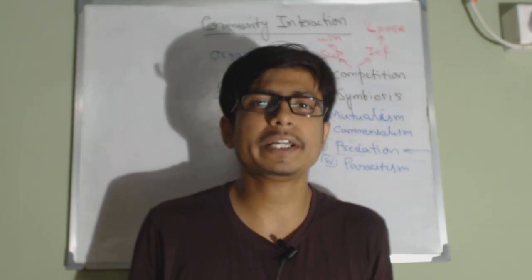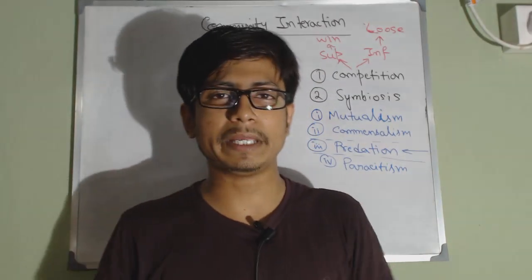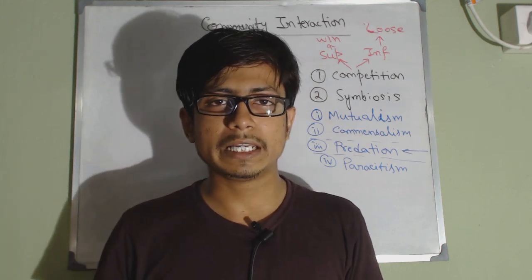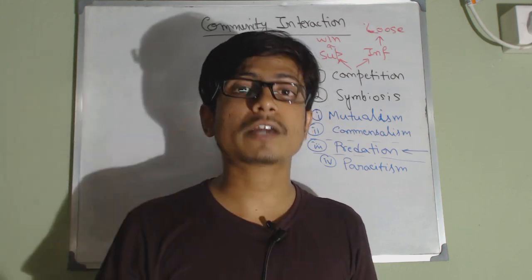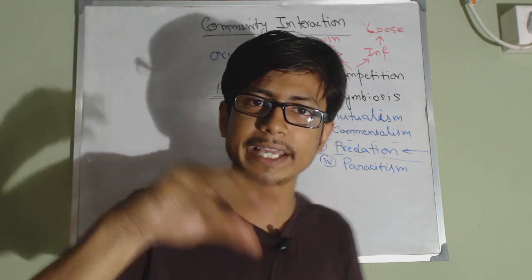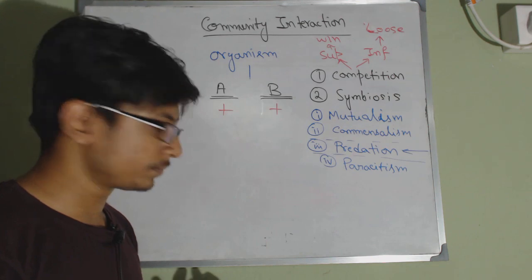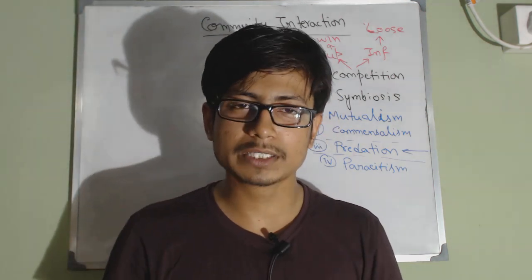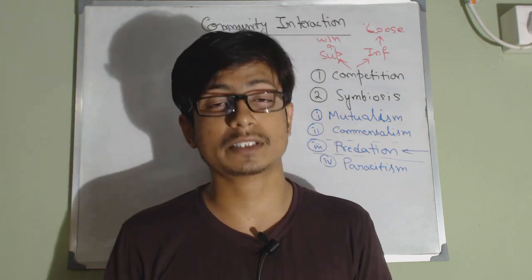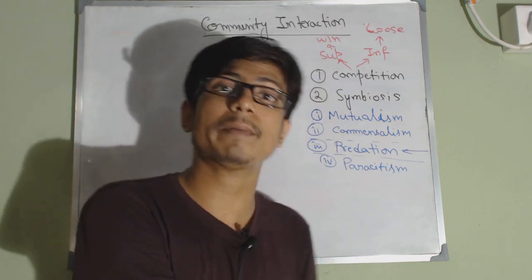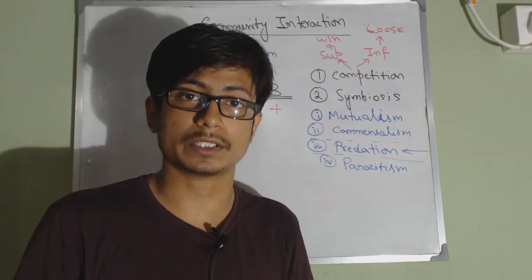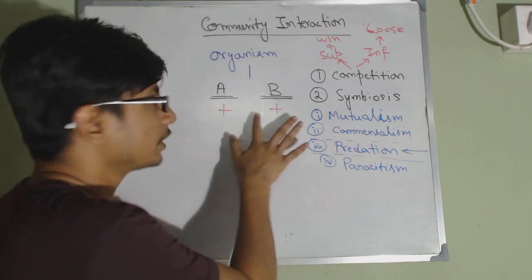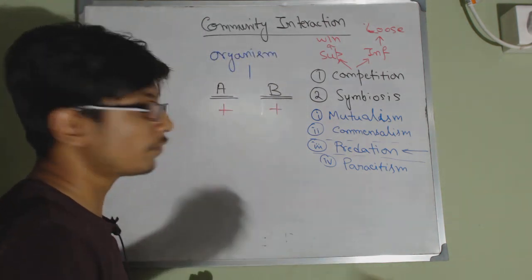A common example of mutualism, including in human beings, is gut microflora. We have microflora in our intestine — like Escherichia coli or Bifidobacteria — they live there, provide important things to us such as calcium and vitamin K, and help prevent infections. We in turn give them a nutrient source to live. Both benefit, which is mutualism.